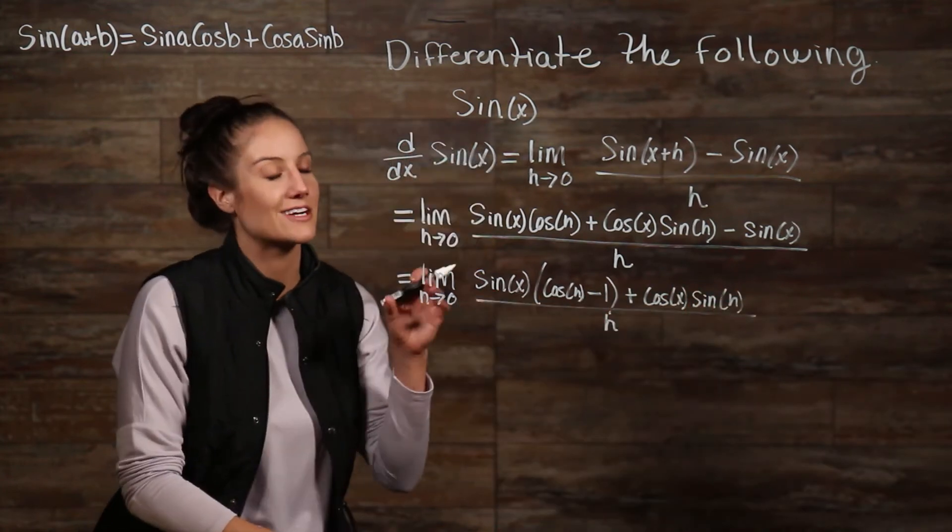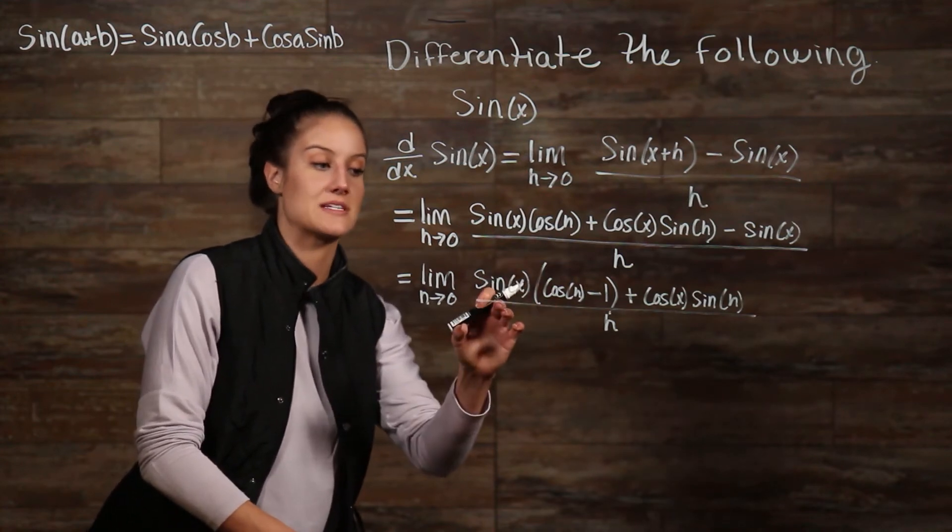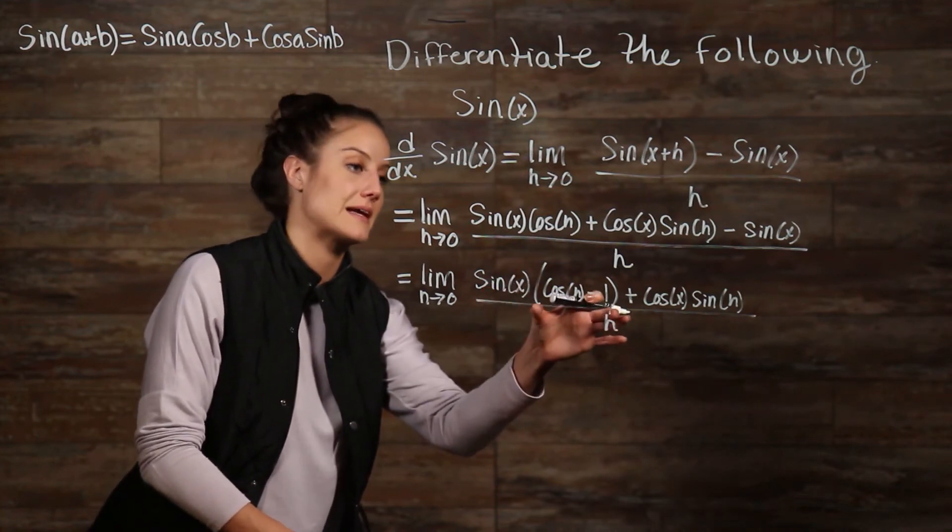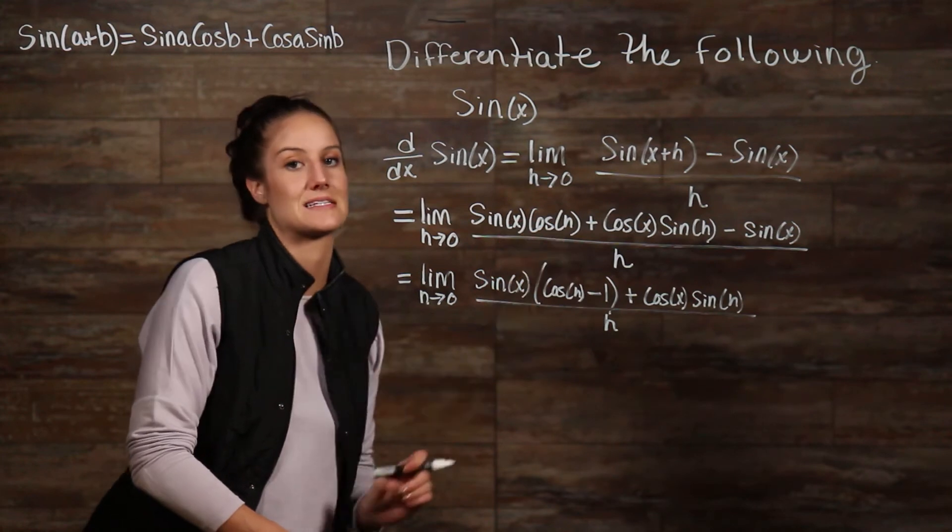Now, you can see that I haven't actually changed anything by doing this. If I multiply sine of x by everything in the parentheses, I end up with this same term minus the sine of x.